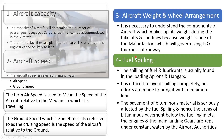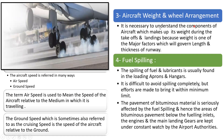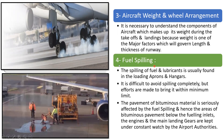The next characteristic is aircraft weight and wheel arrangement. It is necessary to understand the components of the aircraft that make up its weight during takeoffs and landings, because weight is one of the major factors governing the length and thickness of the runway. The way the wheels are arranged is also part of this characteristic.